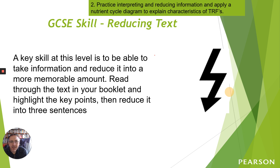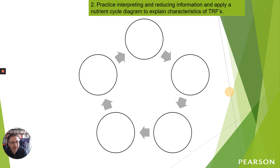An important skill is being able to reduce text down and take key information. You'll have a page of text in your booklets about this - I want you to read through and reduce it down to create your own nutrient cycle. Put a few lines in each circle from that text to show how the nutrients move.